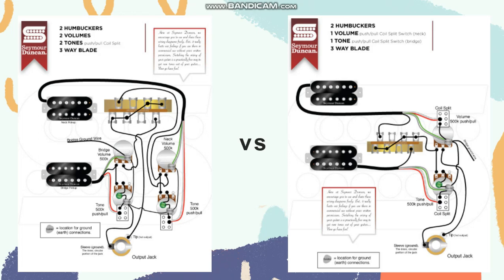Figure one has two split coils connected directly to the tone. Figure two also has two splits, but one split is connected to the tone and the other is connected to the volume. We can see the comparison very clearly between the two circuits.